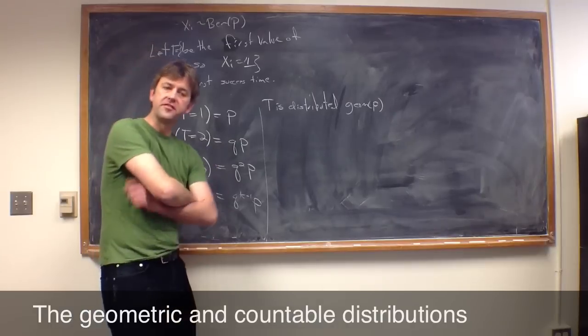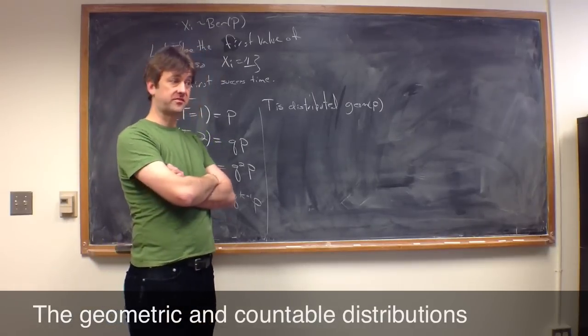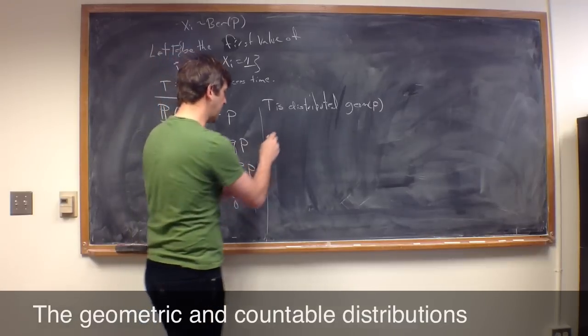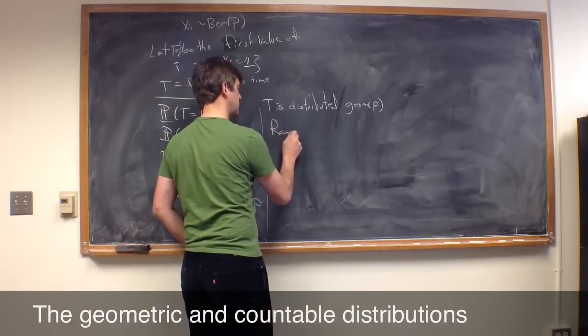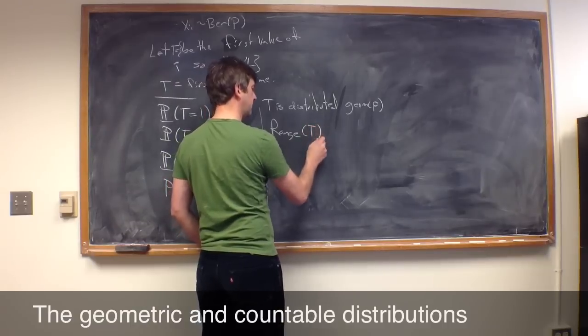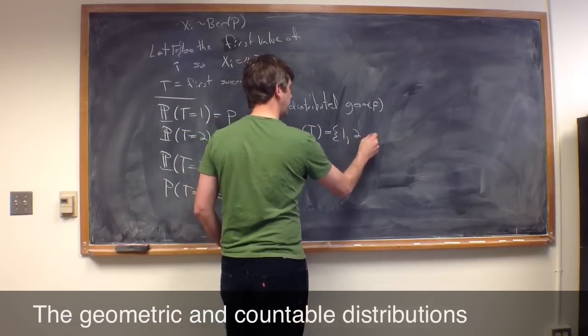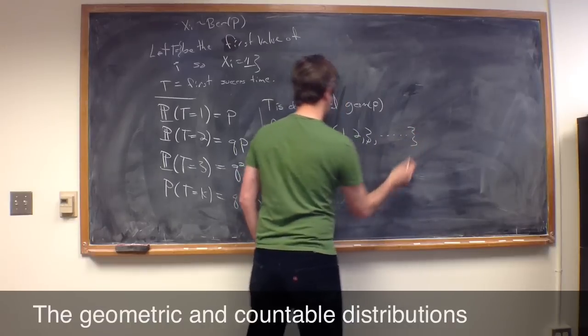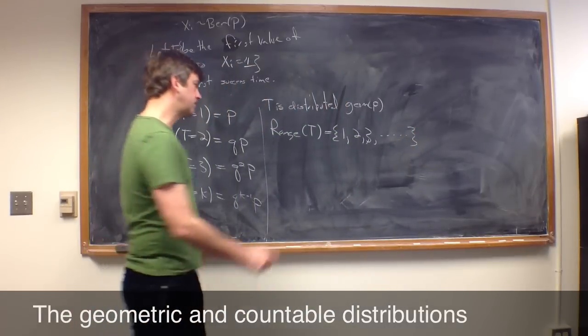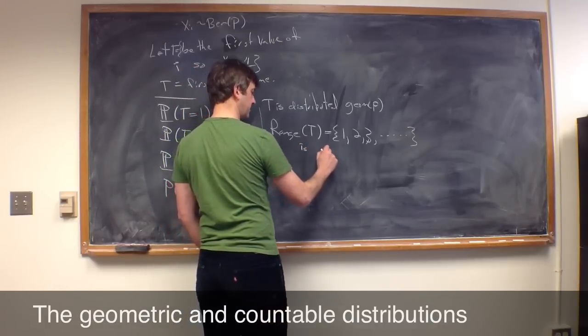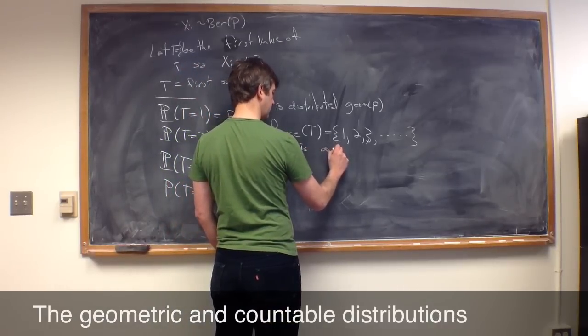Now, notice a few things are different about this random variable than all the others we've discussed so far. The range, what's the range of t? Well, it's actually equal to 1, 2, 3, and so on. So the range is infinite.